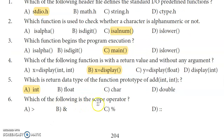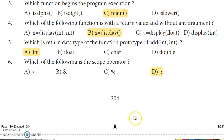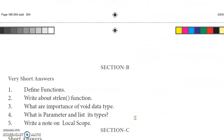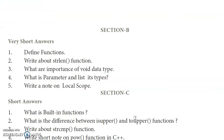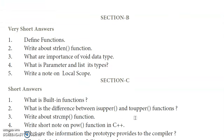The scope resolution operator is the double colon symbol (::). That is the scope resolution operator. Now we will look at Section B — very short answers.